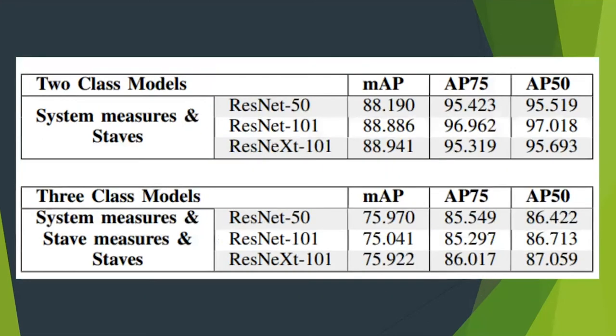I also trained on two categories - system measures and staves - and on all three categories together, like you would normally do. But unfortunately, the results weren't quite as good as single class models. It's a bit expected because single models are easier, but they're a lot better.